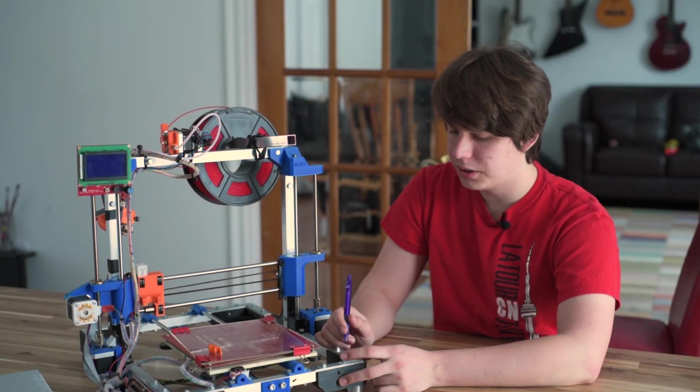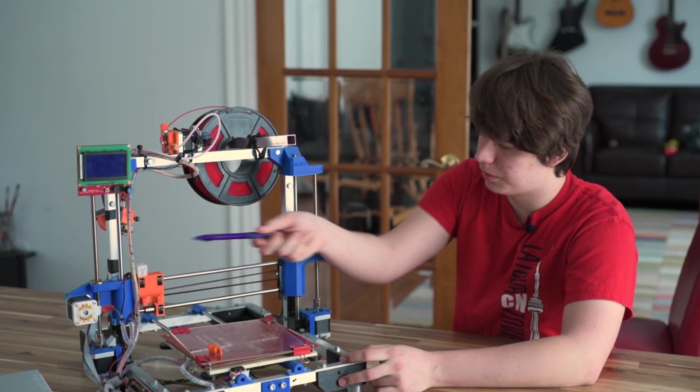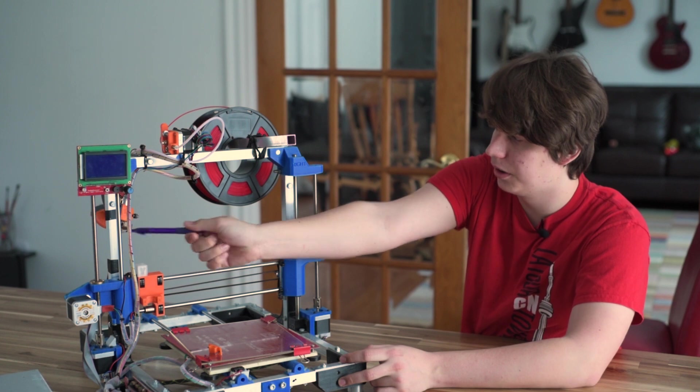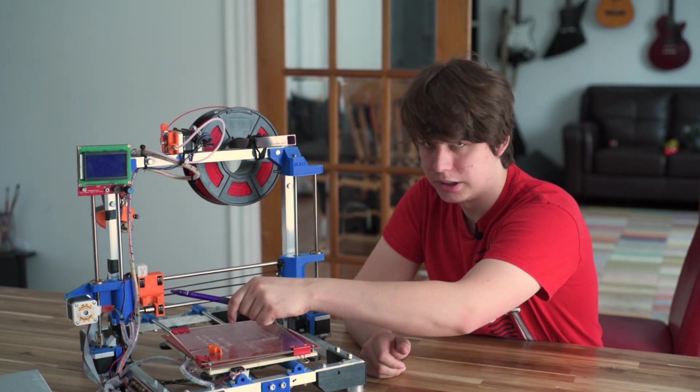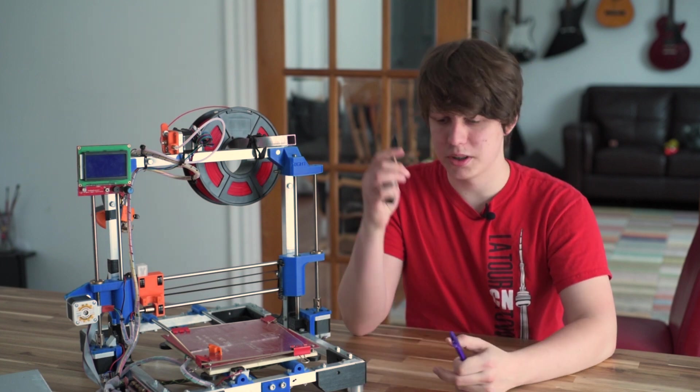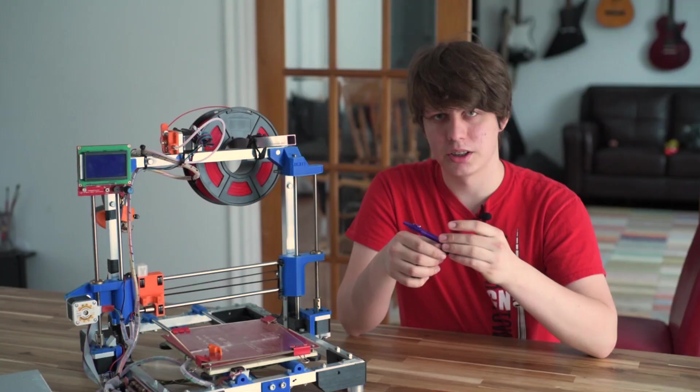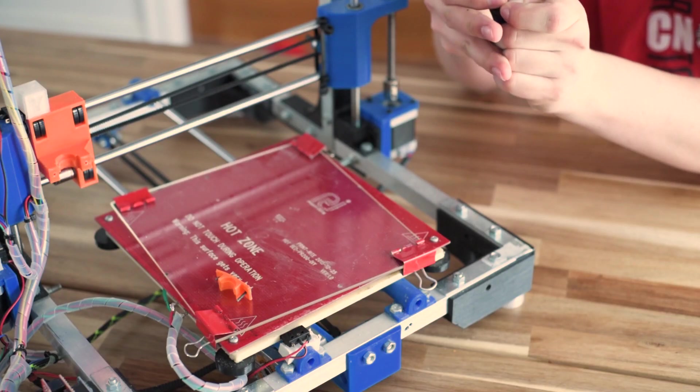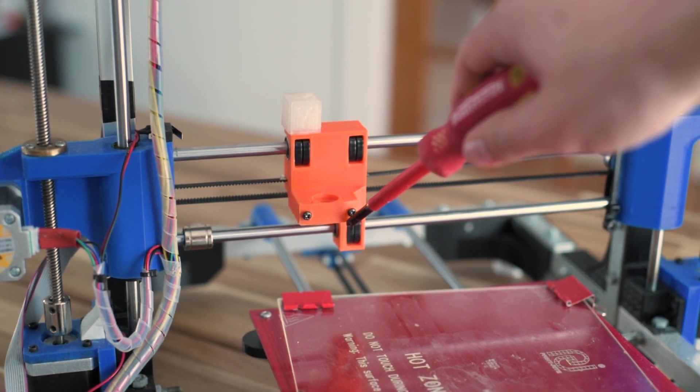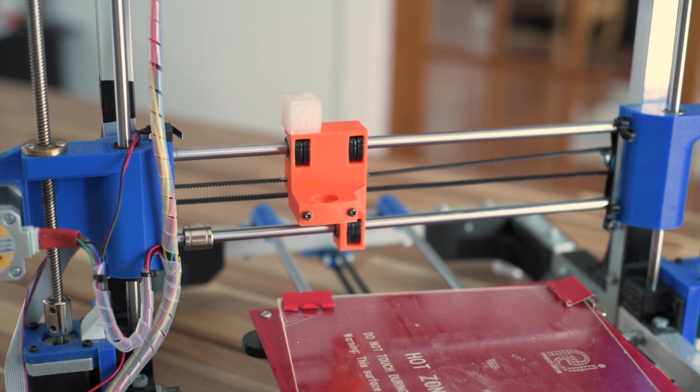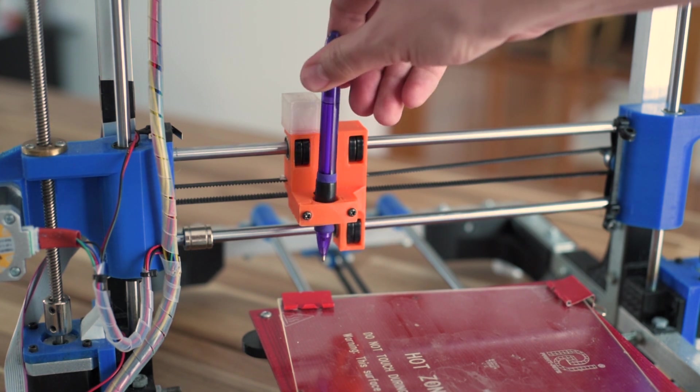Alright, so now that you've removed the extruder assembly over here, it's time to attach the pen to the carriage. All you need to do is just take a bit of tape and wrap it around the pen. Okay, now let's attach this pen to the actual printer. What you have to do is attach the brace and then just take your pen and slide it in.